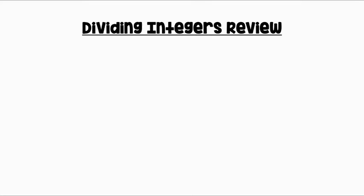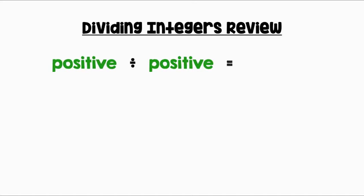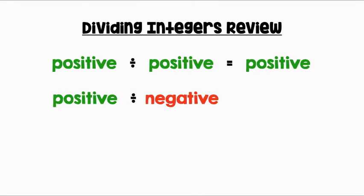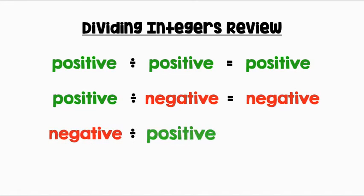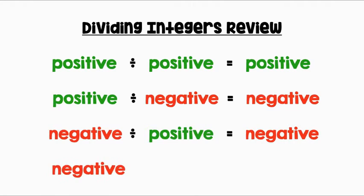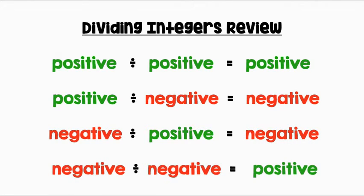Dividing rational numbers. Let's review our rules for dividing integers. A positive divided by a positive equals a positive. A positive divided by a negative equals a negative. A negative divided by a positive equals a negative. A negative divided by a negative equals a positive. These rules will apply to dividing all rational numbers.